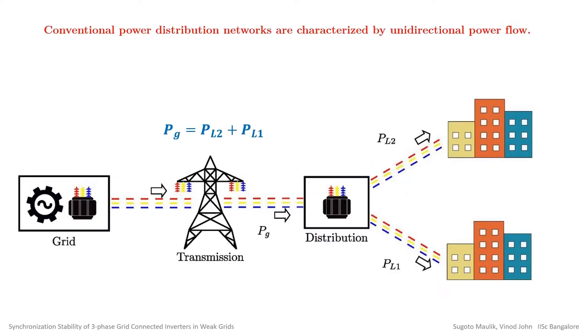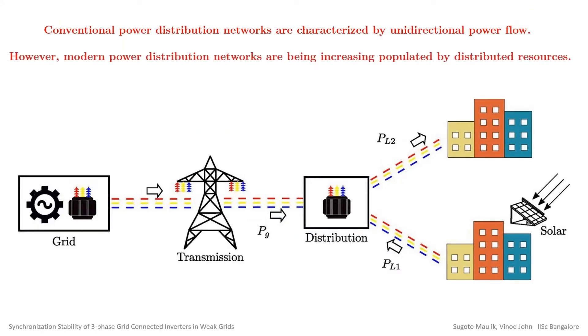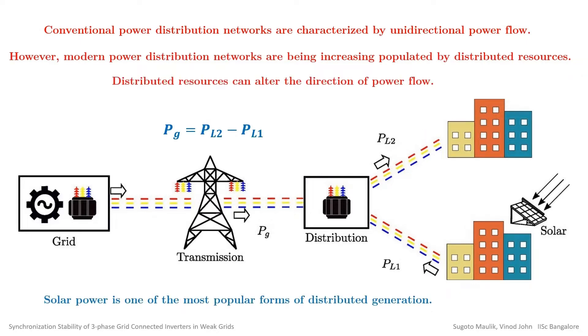Conventional power distribution networks are characterized by unidirectional power flow. However, with the addition of distributed resources like solar, the direction of power flow in such networks is being altered.